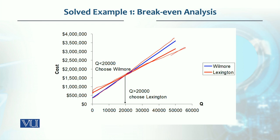And we see that the break-even point is coming at around 20,000 units.